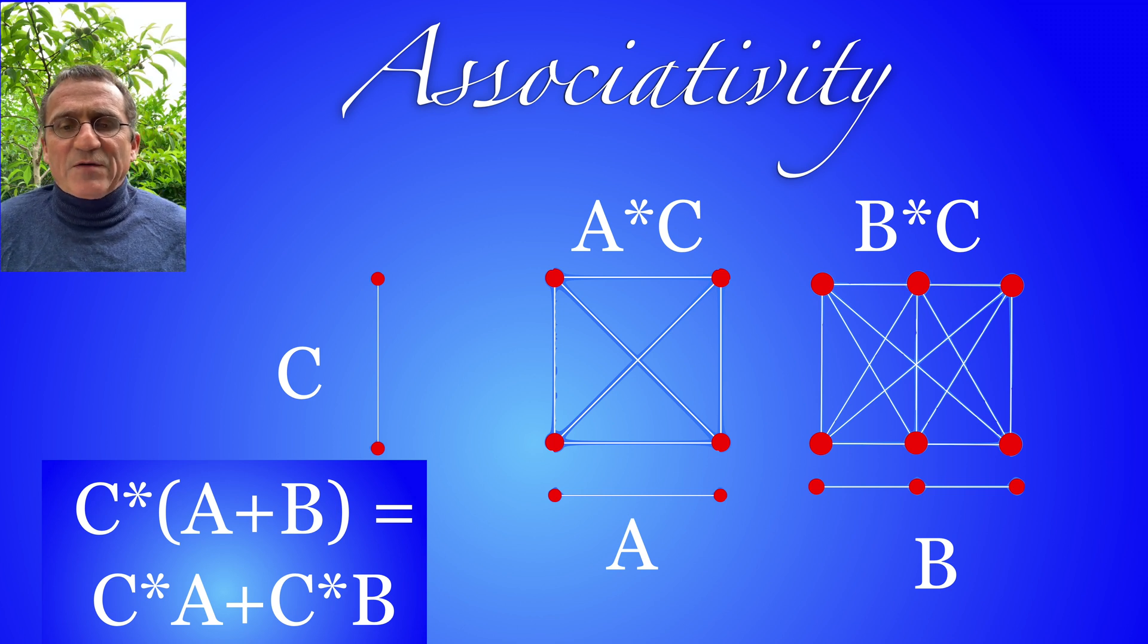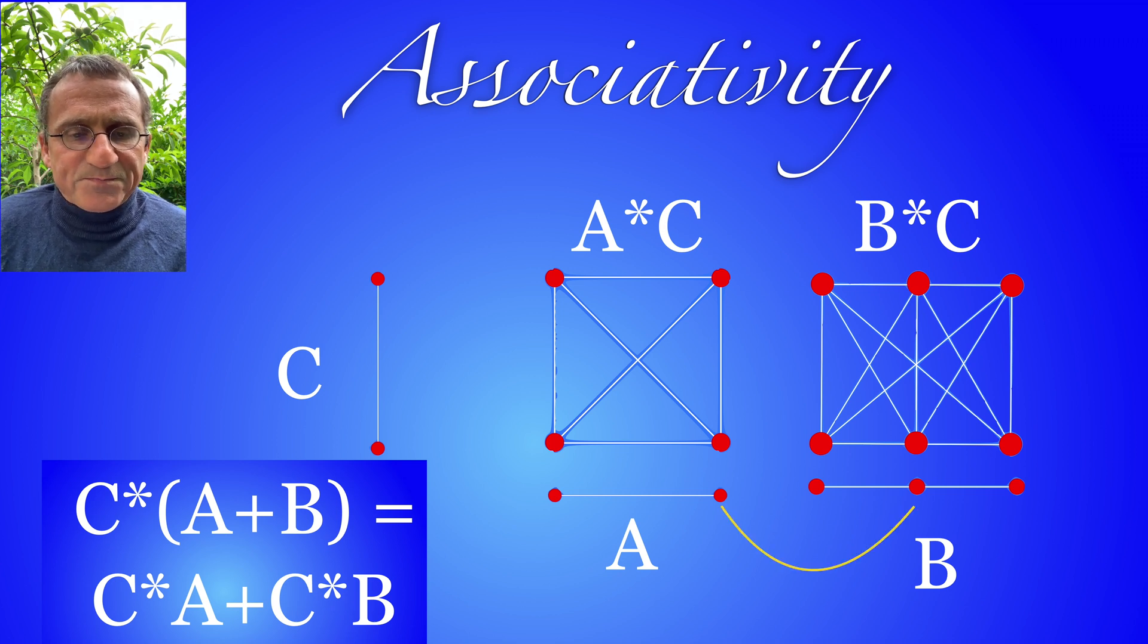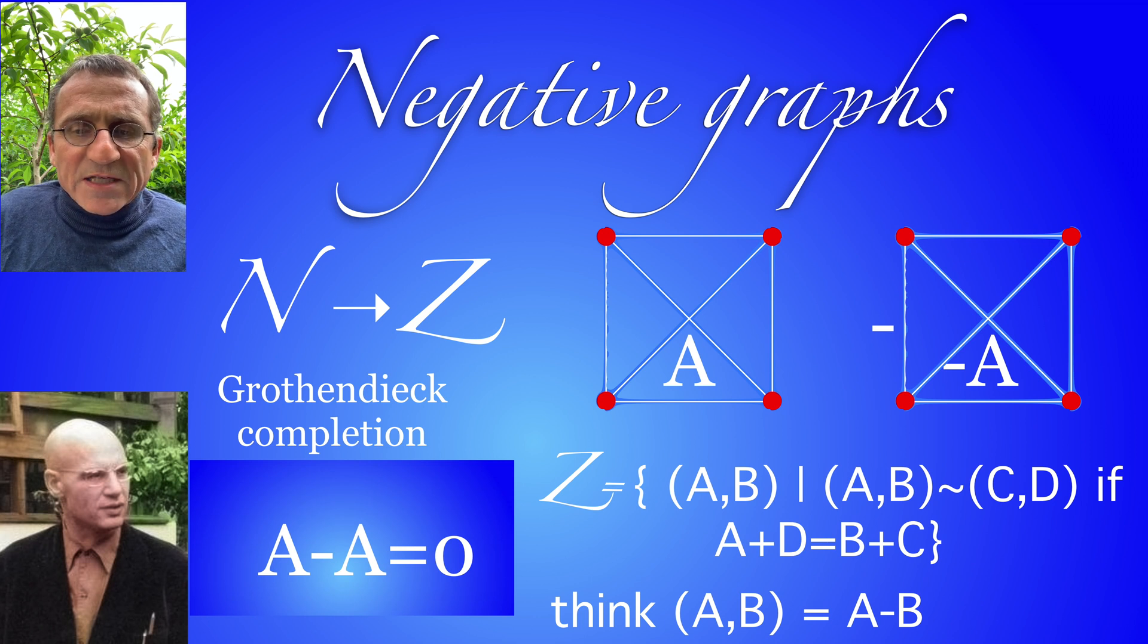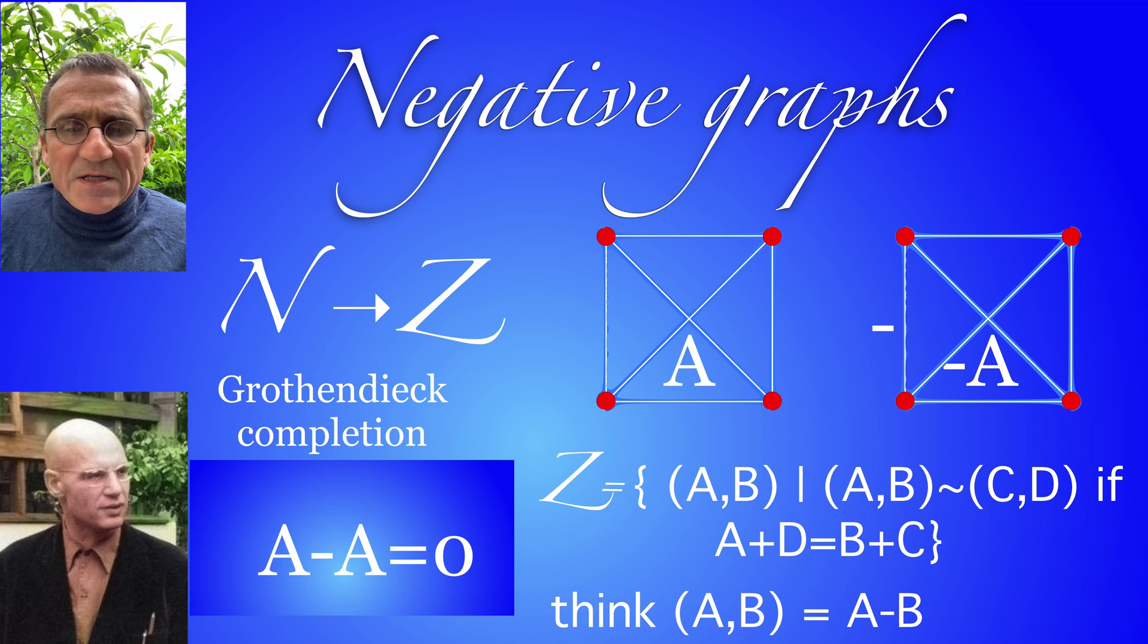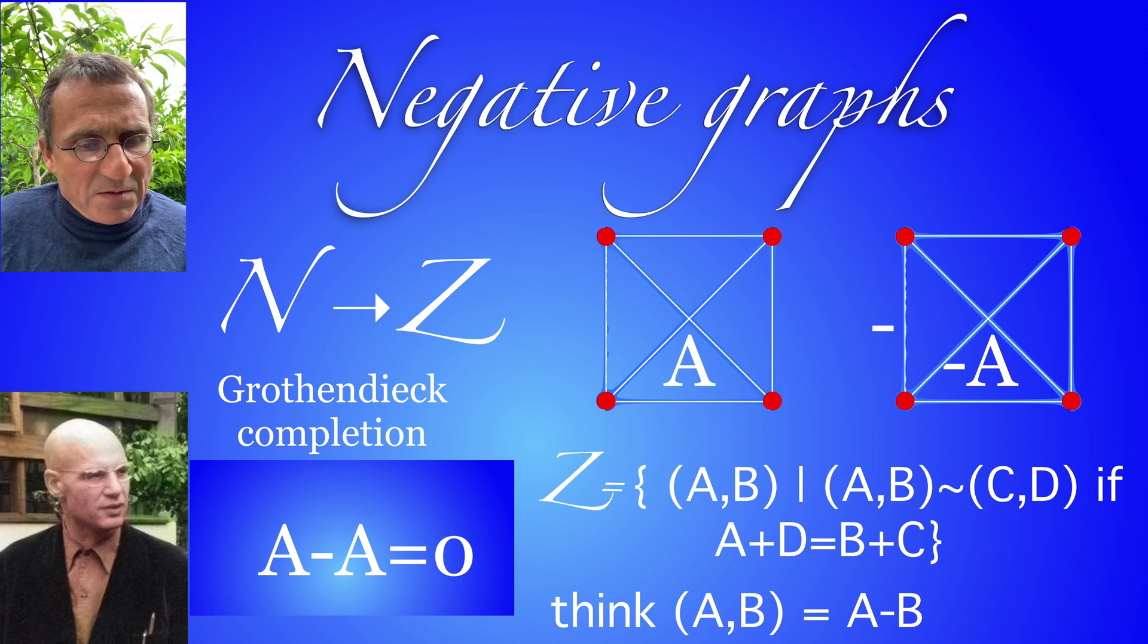You can now check that after introducing negative graphs this becomes a ring. So for negative graphs they are introduced by general principles. The addition forms a monoid and the Grothendieck completion produces then a group so that we have an additive group.